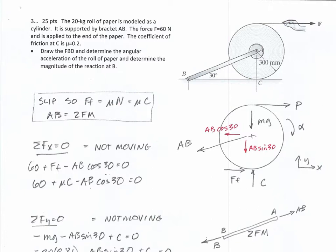Draw the free body diagram: pulling force, MG, normal force at C, force of friction, and the AB two-force member. Put the components of AB on the diagram — AB cosine theta and AB sine theta. When you put them all in there, you have much less chance of forgetting them in your equations.